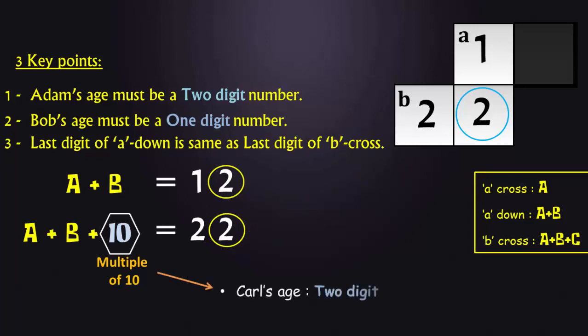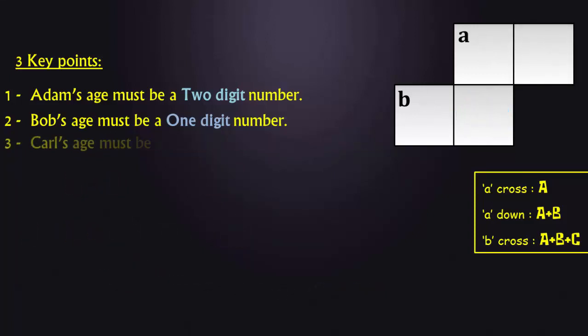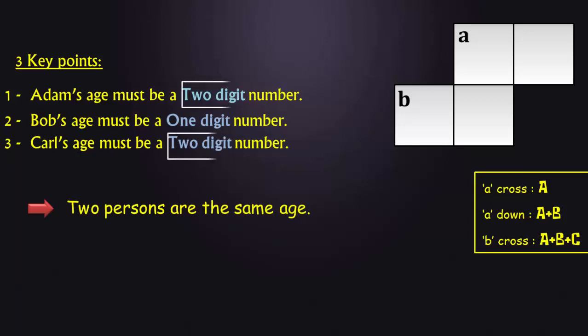It's very clear from this analysis that Karl's age has to be a two digit number, because it has to be a multiple of 10. Now we know that Adam's age is a two digit number, Bob's age is a single digit number, and Karl's age is a two digit number. And since two of them are the same age, they must be Adam and Karl, because only they both have the two digit value of age.